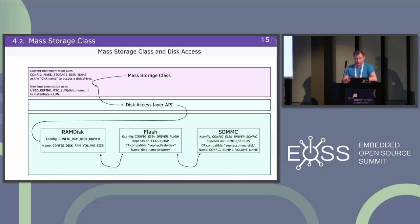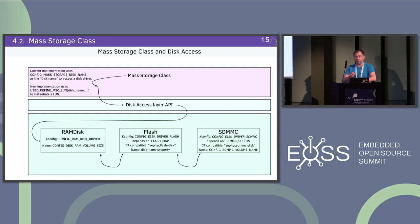If you have trouble with mass storage class support, use the RAM disk as a backend — it should always work because it just uses an area in memory. It's defined in the disk code itself. If that doesn't work, open a bug report for USB. We also have flash disk support, which supports multiple instances and can be configured using device tree — just provide a flash disk and disk name property.